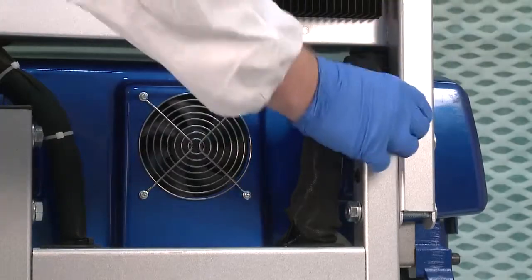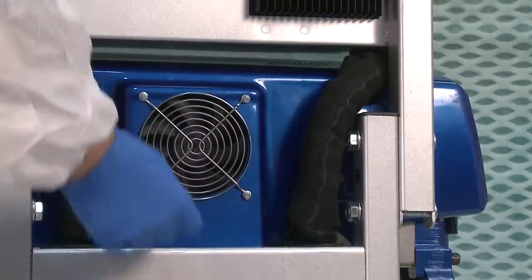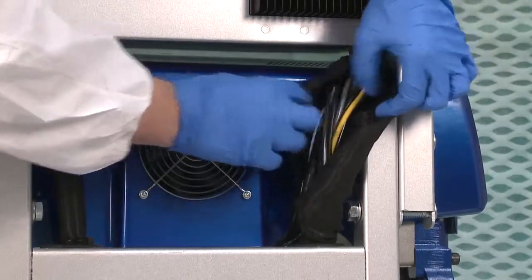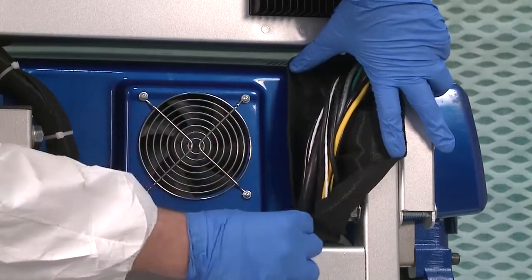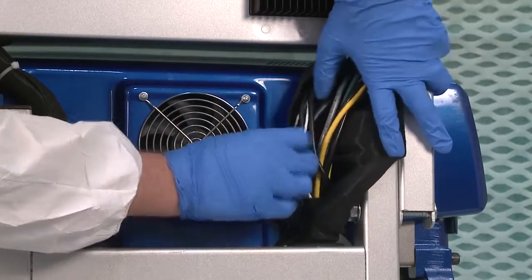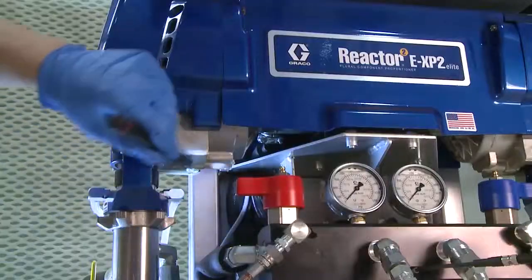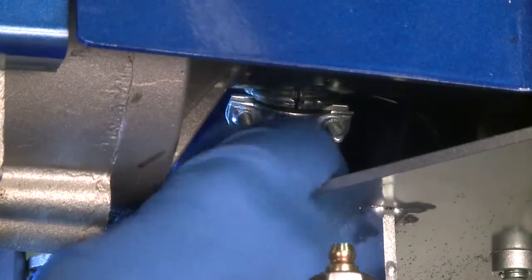Remove all cable ties and pull back protective covering so that the wire can be fully inspected. When finished, be sure to re-secure wiring and protective covering with new cable ties. Finally, verify cable is not damaged at strain relief on motor case.